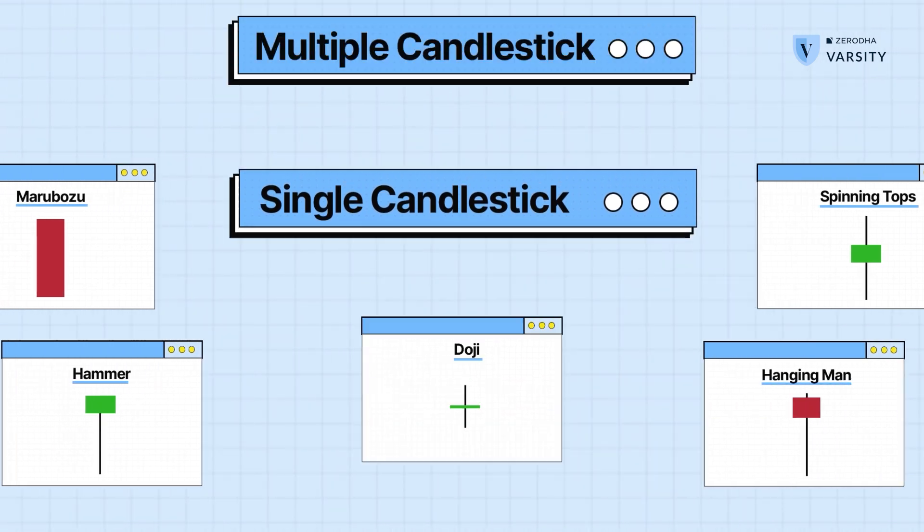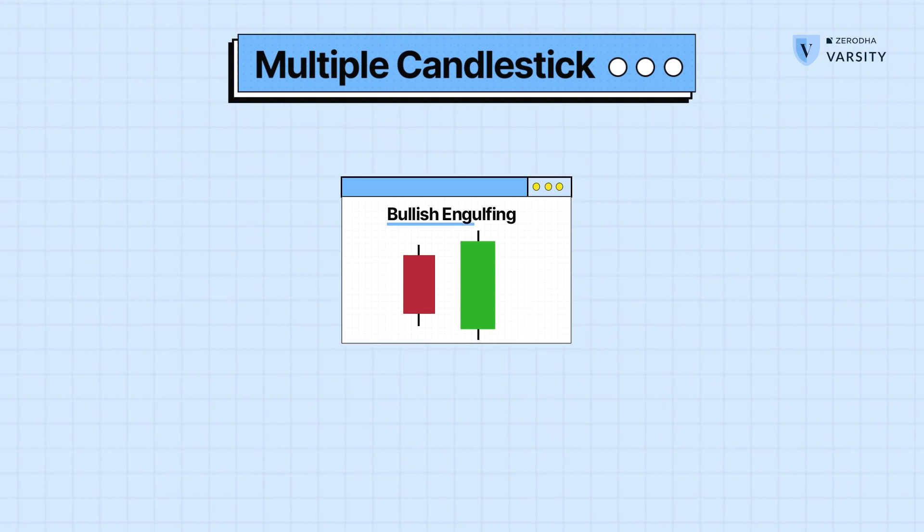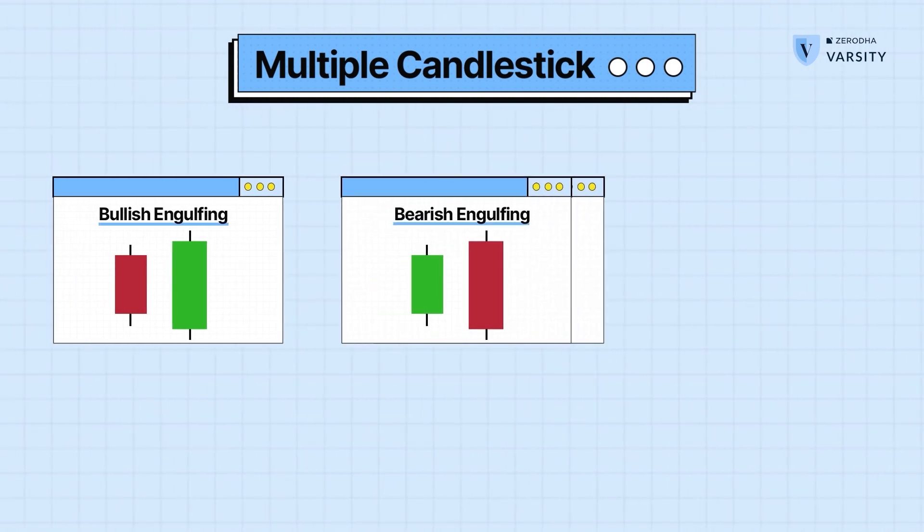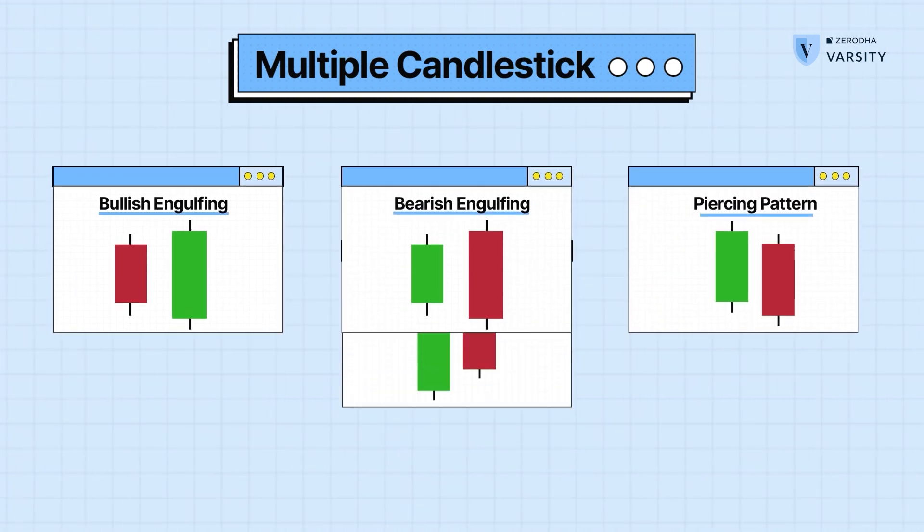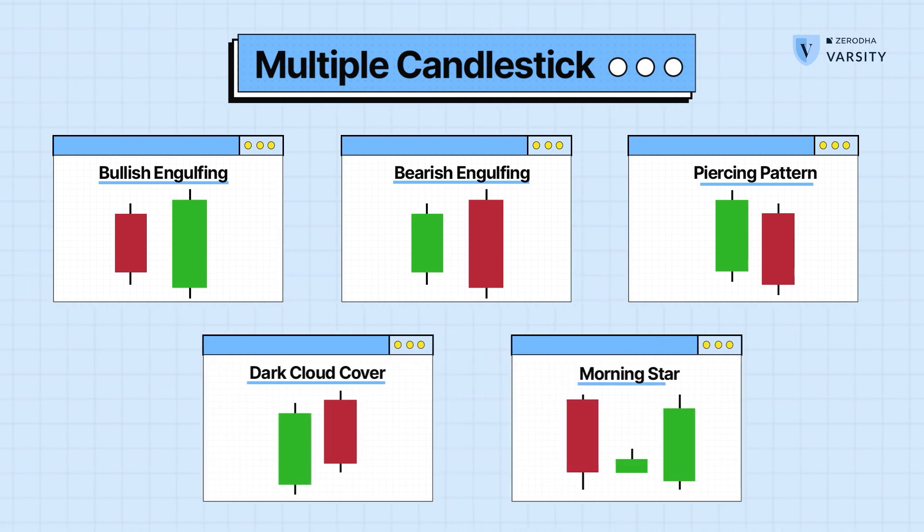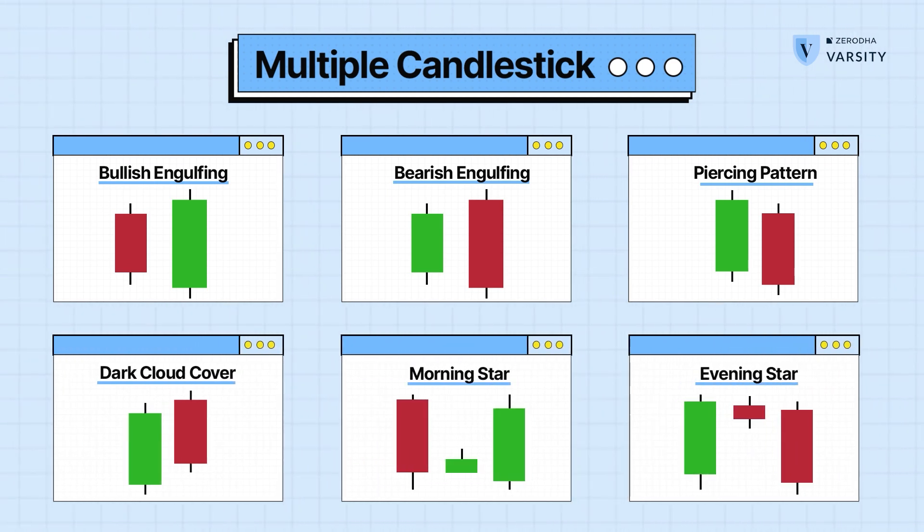For multiple candlestick patterns, you have the bullish engulfing, the bearish engulfing, the piercing pattern, the dark cloud cover and the morning and evening star.